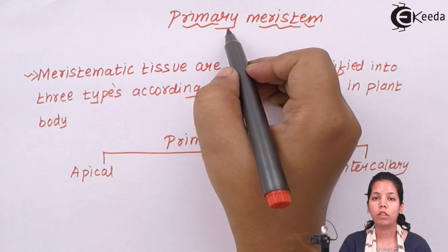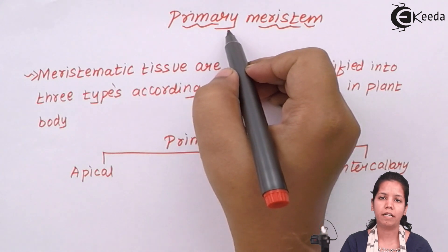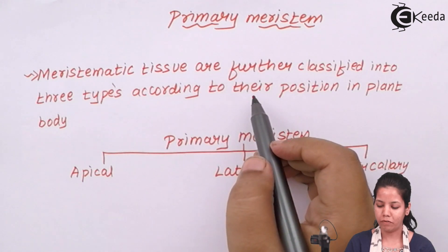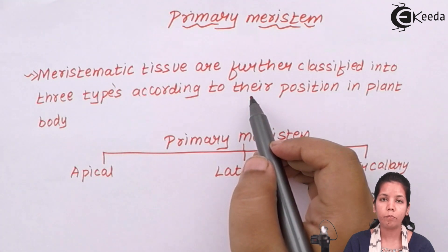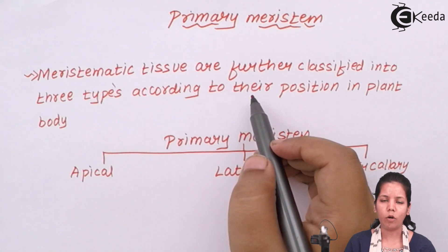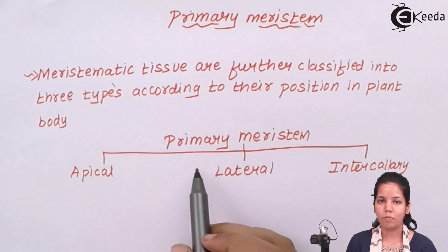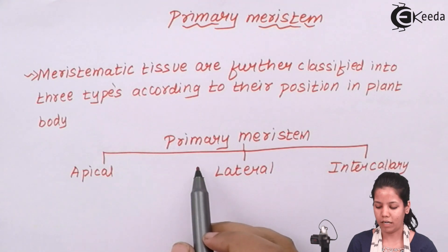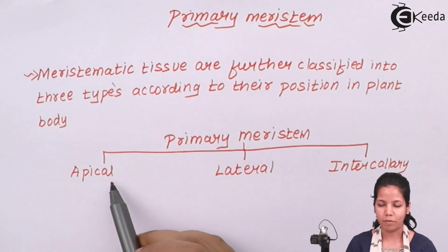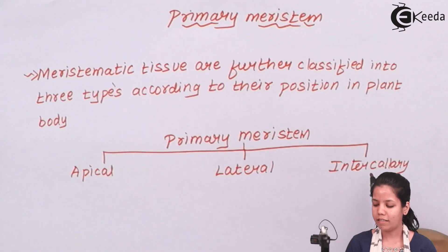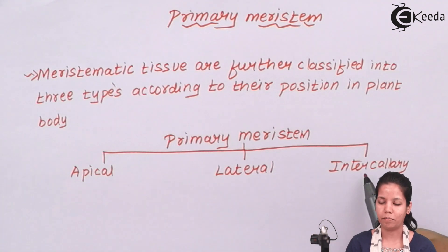To summarize: primary meristem — the first meristem formed in plants — is further divided into three different types on the basis of position and axis where they are located in the plant. These three kinds are: apical meristem, lateral meristem, and intercalary meristem.